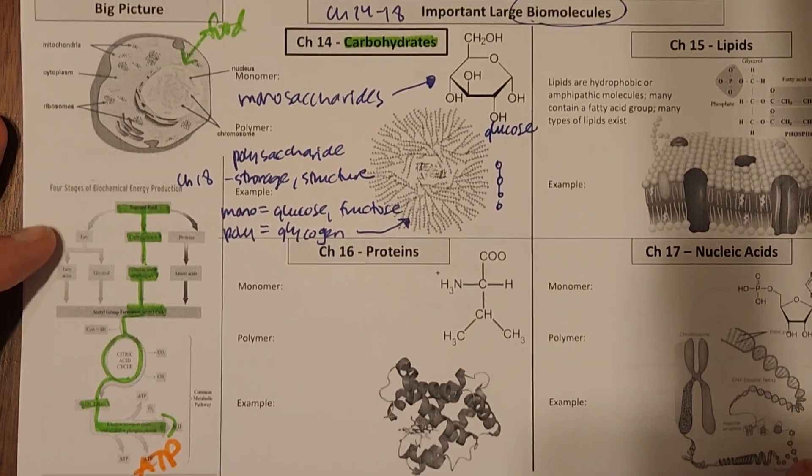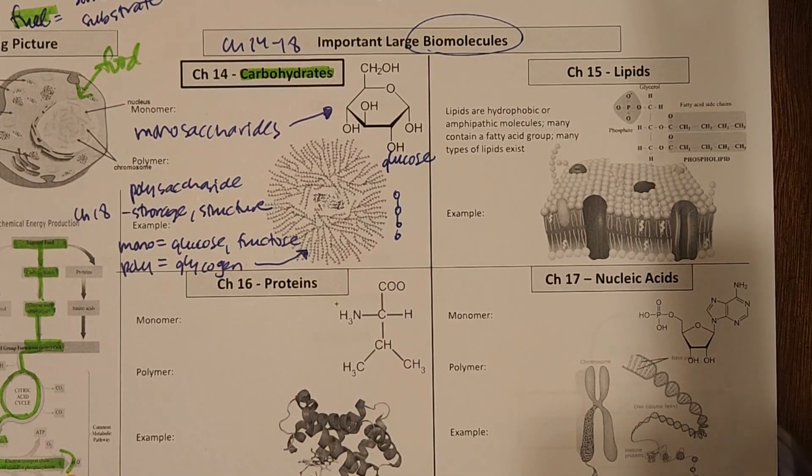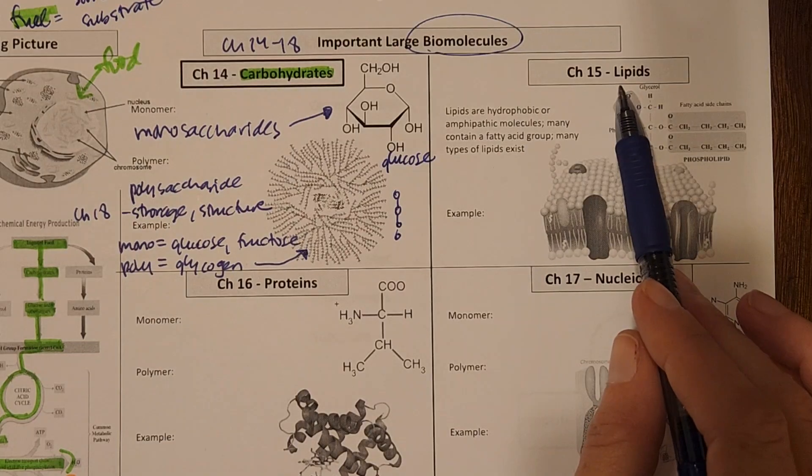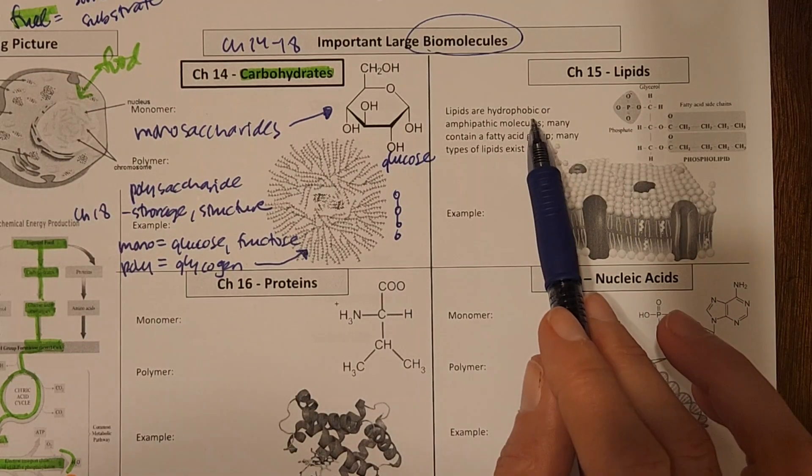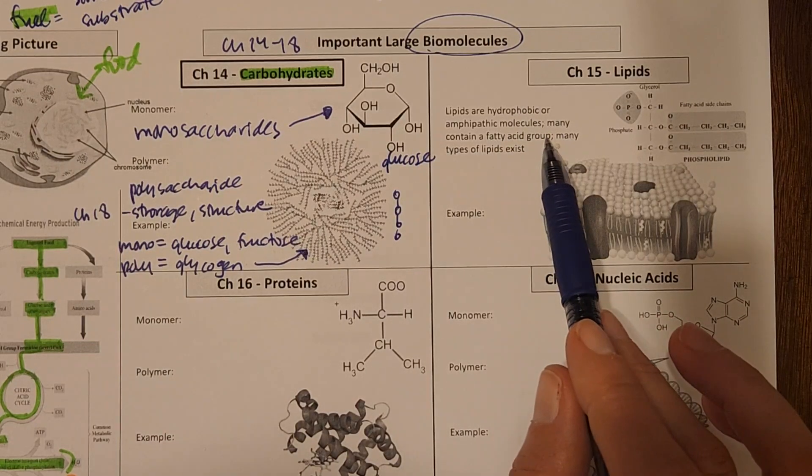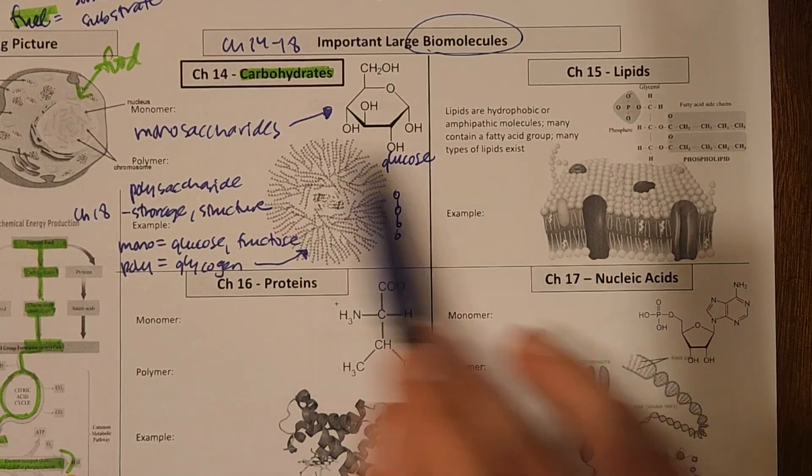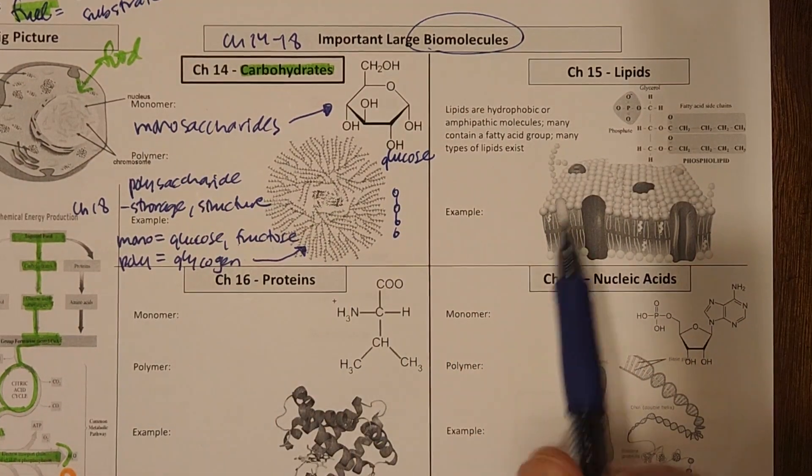Now to take a quick summary look at these other types of biomolecules. In the next chapter, we'll be studying lipids. And lipids are hydrophobic, so water-fearing or amphipathic. Many contain a fatty acid, and there are a lot of types of lipids. So we can't just break it down into monomer, polymer like we did over here.